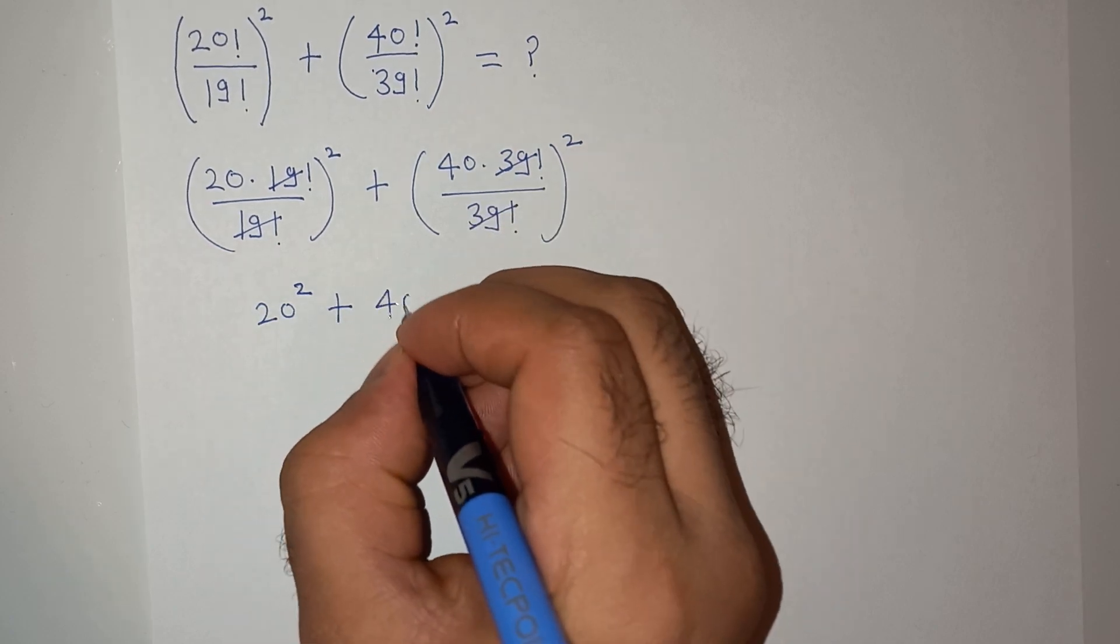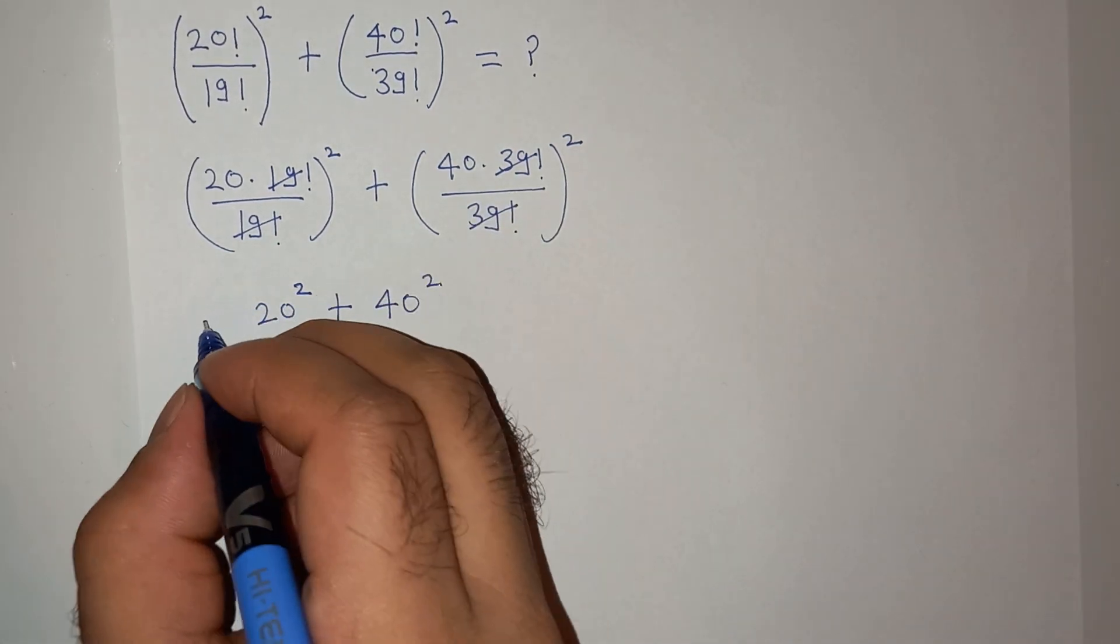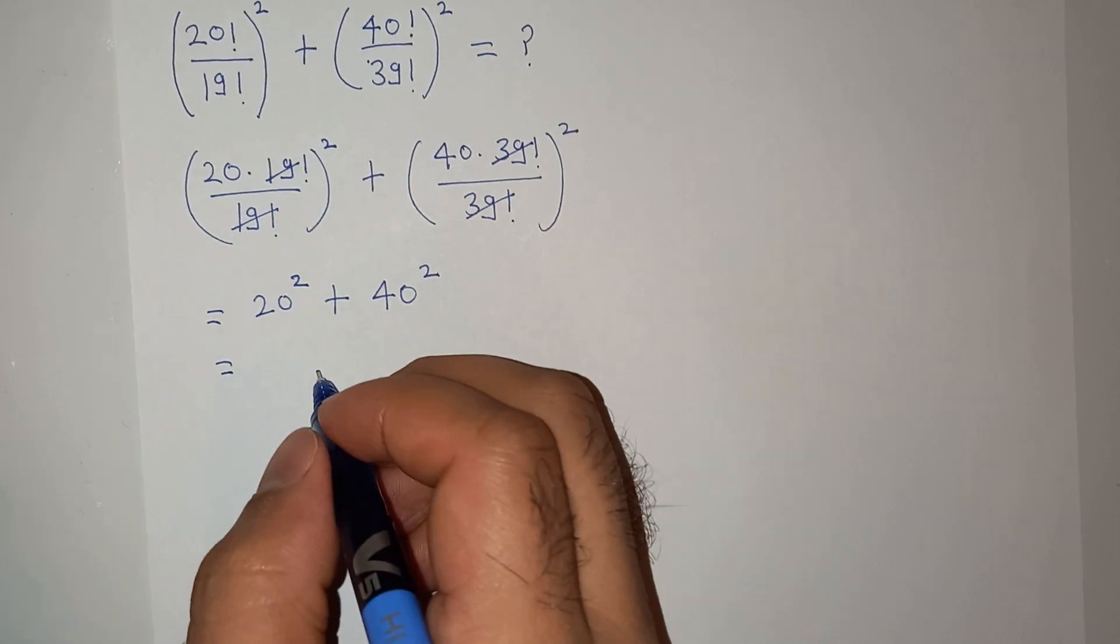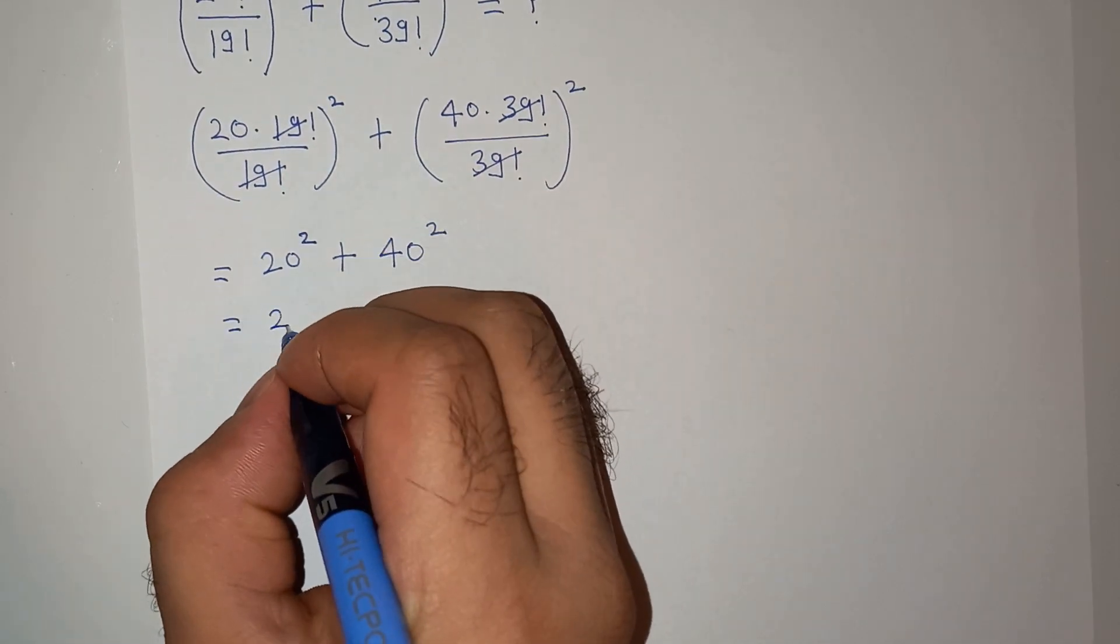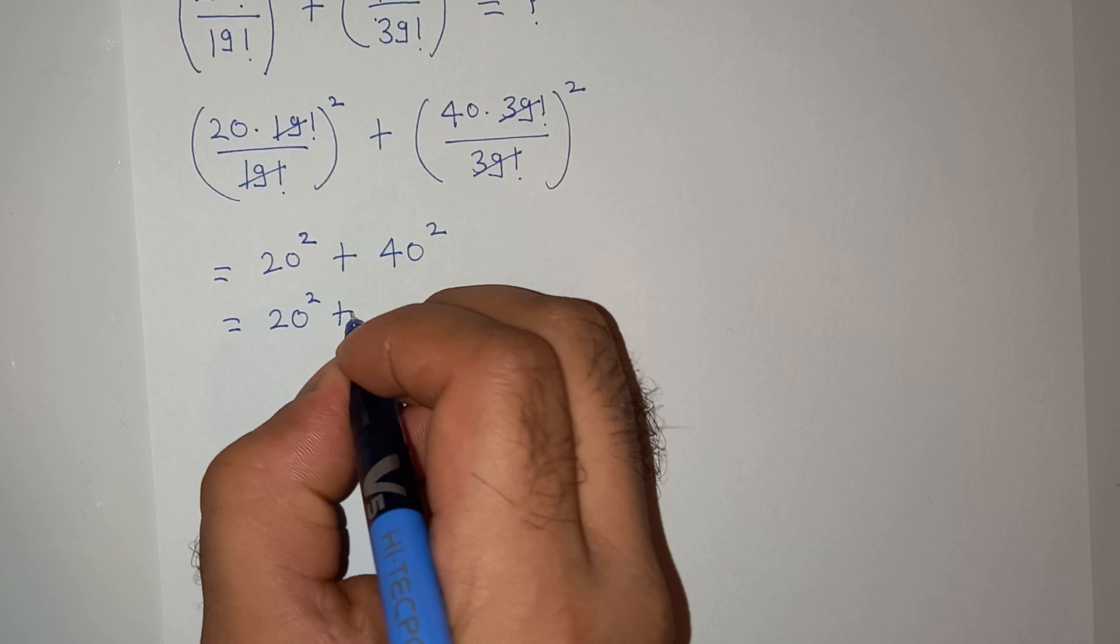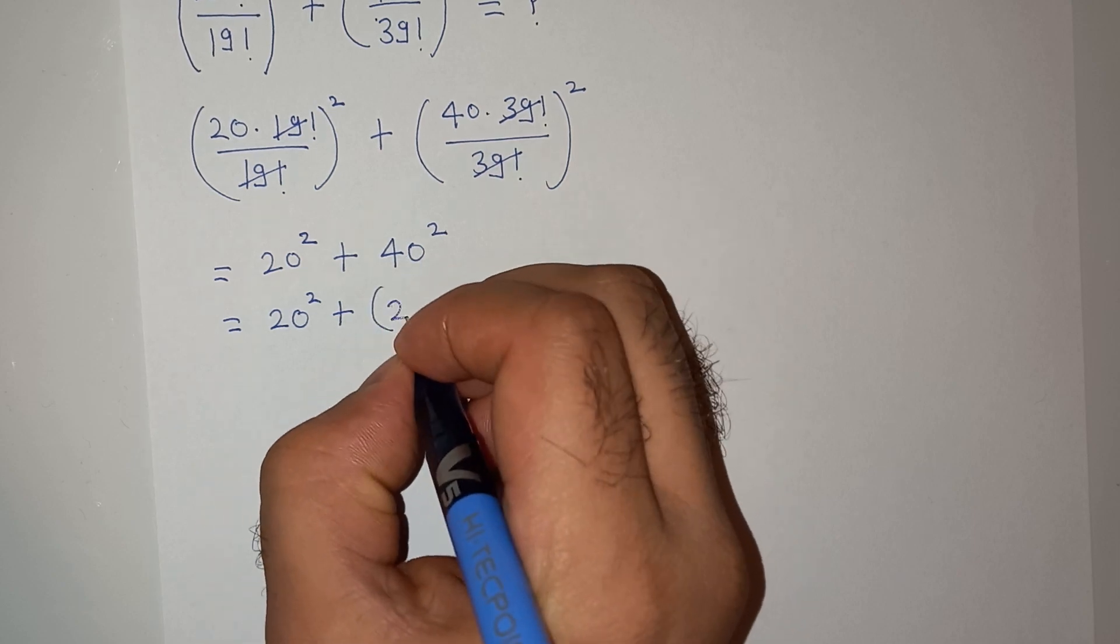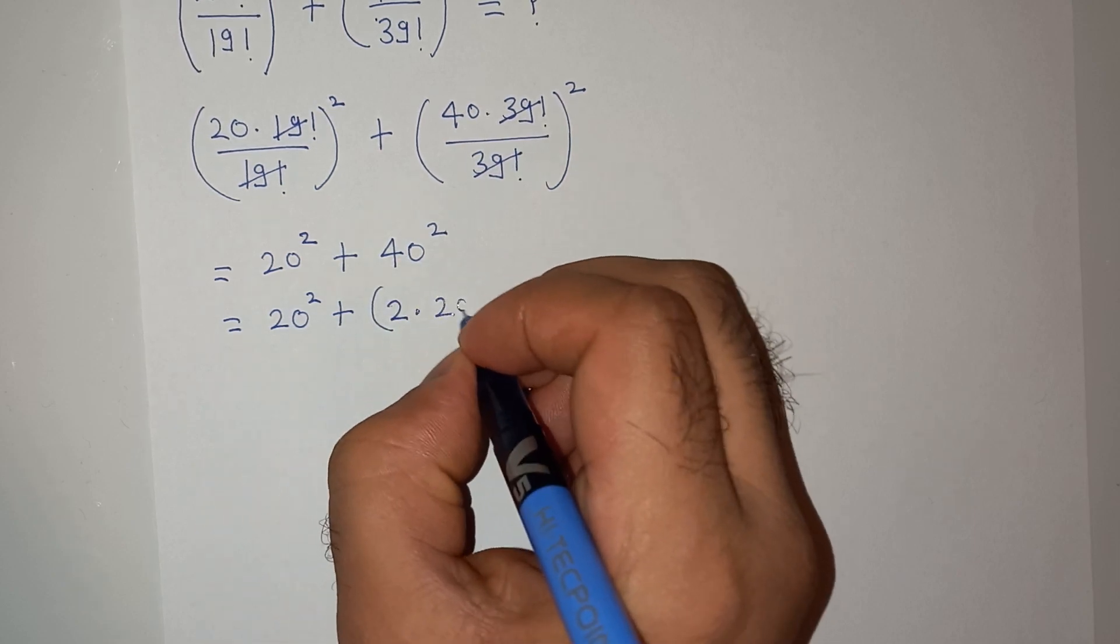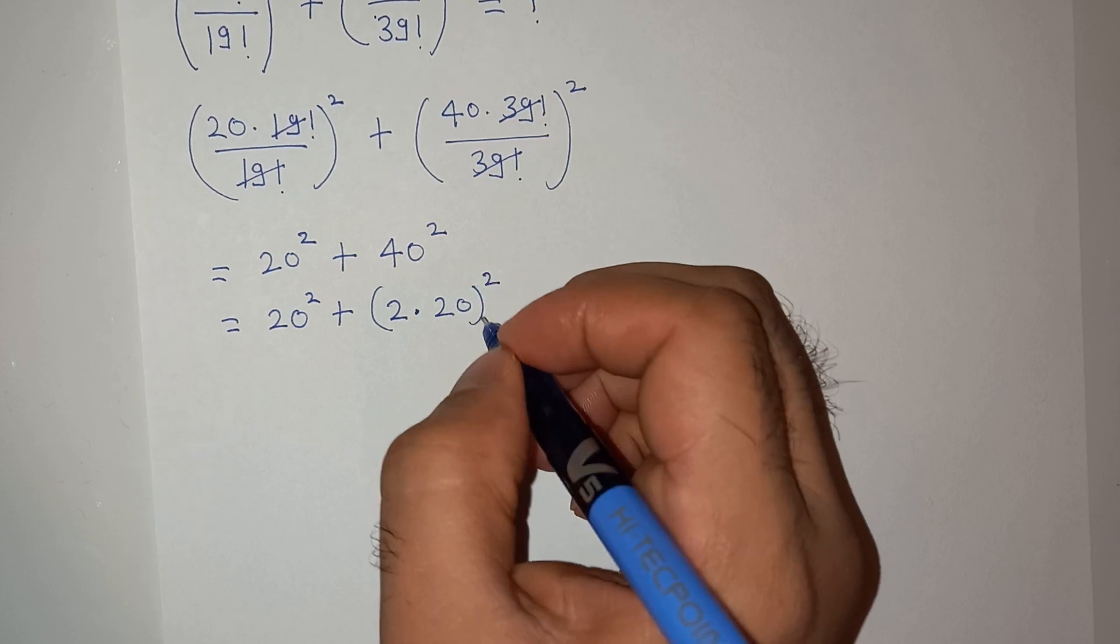Now this will be 20 square, and 40 can be written as 2 multiplied by 20, and then square.